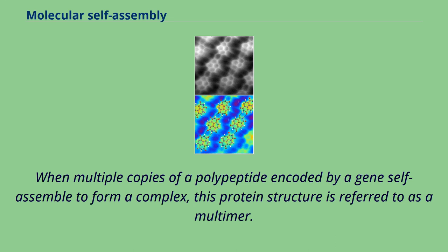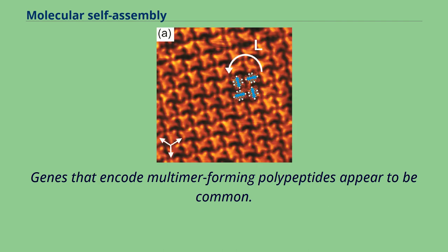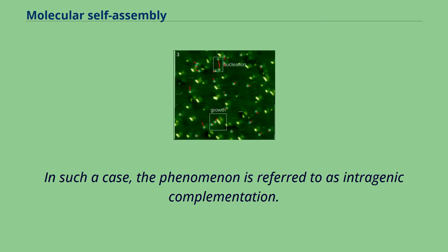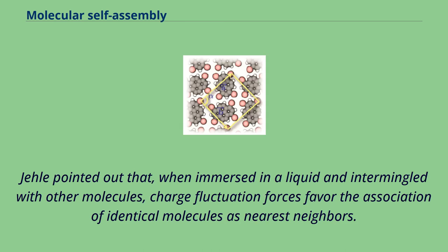When multiple copies of a polypeptide encoded by a gene self-assemble to form a complex, this protein structure is referred to as a multimer. Genes that encode multimer-forming polypeptides appear to be common. When a multimer is formed from polypeptides produced by two different mutant alleles of a particular gene, the mixed multimer may exhibit greater functional activity than the unmixed multimers formed by each of the mutants alone — a phenomenon referred to as intragenic complementation. It was pointed out that when immersed in a liquid and intermingled with other molecules, charge fluctuation forces favor the association of identical molecules as nearest neighbors.